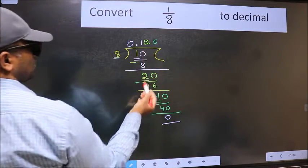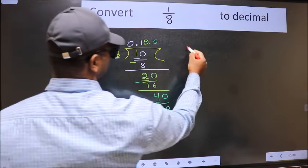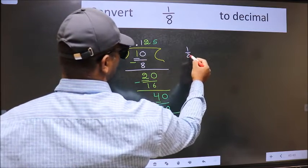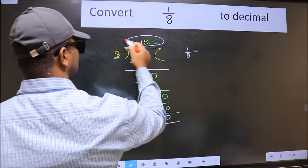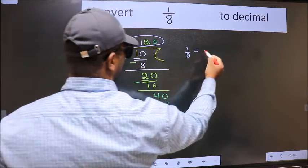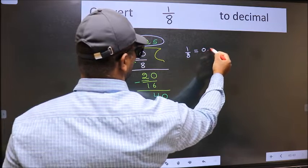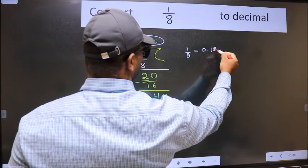So 1 by 8 — the decimal of this is 0.125. That is our answer.